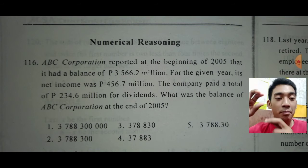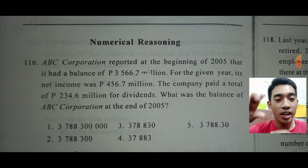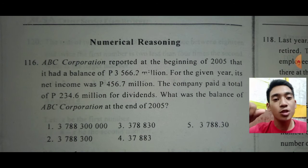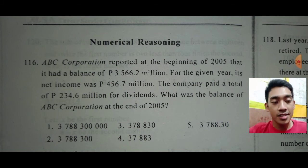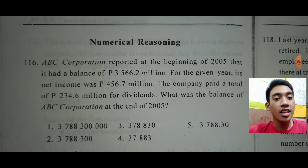The beginning balance is 3,566.2 million, add 456.7 million, then subtract the dividends paid of 234.6 million. What is the new balance at the end of 2005? The answer choices are: (1) 3 billion 788 million 300 thousand, (2) 3,788,300,000, (3) 378,830, (4) 37,833, and (5) 3,788.30 million.